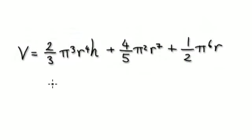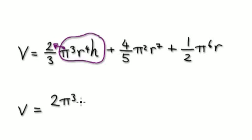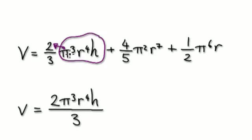But before we do anything, let's tidy this up. Visualize this as one bubble here multiplying a fraction, so it's going to get multiplied to the top. So let's rewrite this: v equals 2 pi to the power of 3, r to the power of 4, h, all over 3. Because it's really a bubble multiplying a fraction, so it gets multiplied to the top.